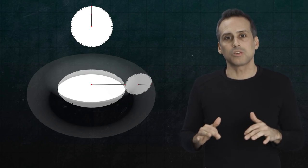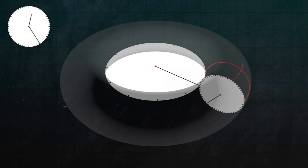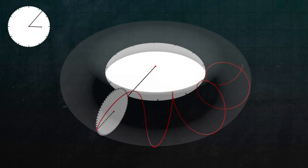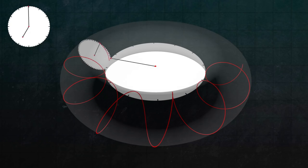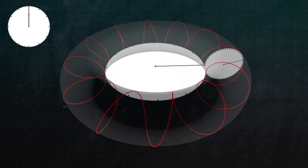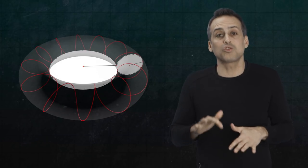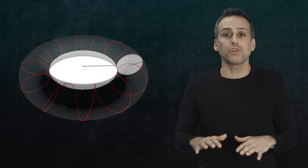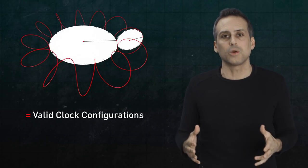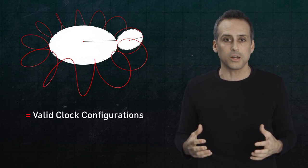OK, now initialize the clock to midnight and let the hands run at their usual steady rates. As time passes, the tip of the minute hand traces out a helical curve that winds 12 times around the torus before closing on itself and starting over. Apparently, the points traced out by that curve should correspond to all the valid clock configurations that actually occur during each 12-hour cycle.